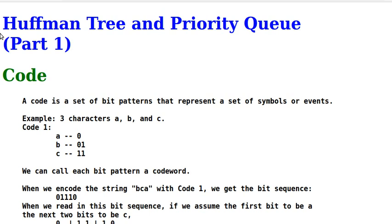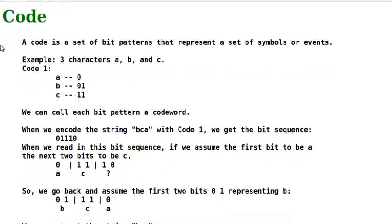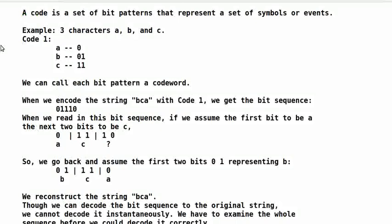In our work, a Huffman tree is used to generate a Huffman code. Let's first discuss codes. A code is a set of bit patterns that represent a set of symbols or events. For example, we have three characters A, B, and C. We can represent them by this code, let's call it code 1. In code 1, A is represented by 0, B by 01, C by 11. We can call each bit pattern a codeword.